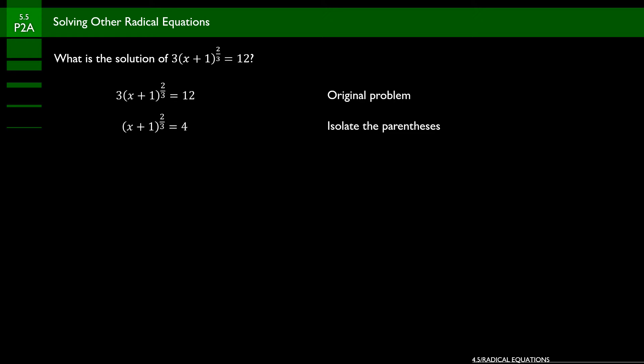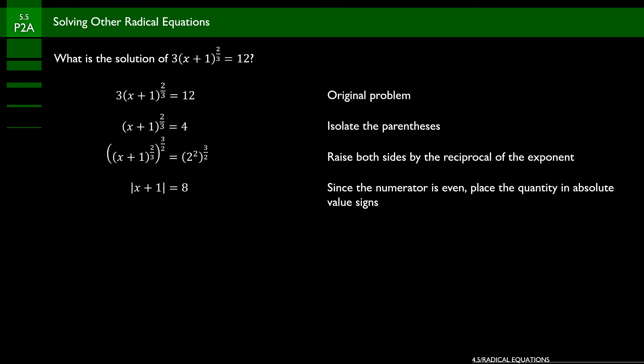Now we have to take care of the rational exponent of 2/3. We raise both sides to the 3/2, which is the reciprocal of 2/3. When you raise an exponent by an exponent, you multiply them together, so the 2/3 and the 3/2 cancel each other out. On the right side, 4 is 2 squared, raised to the 3/2 — the two 2s cancel, leaving 2 to the 3rd, which is 8.